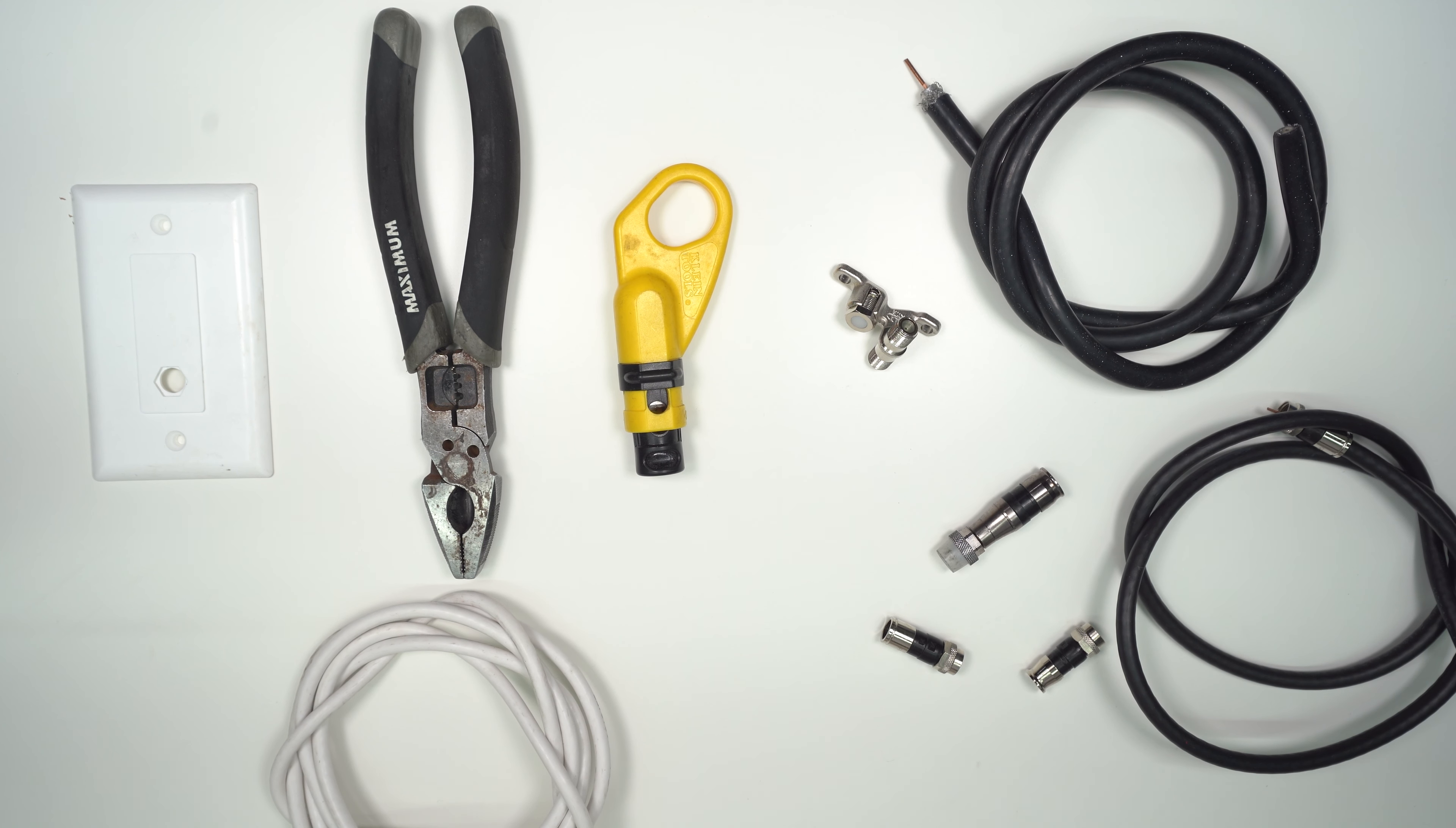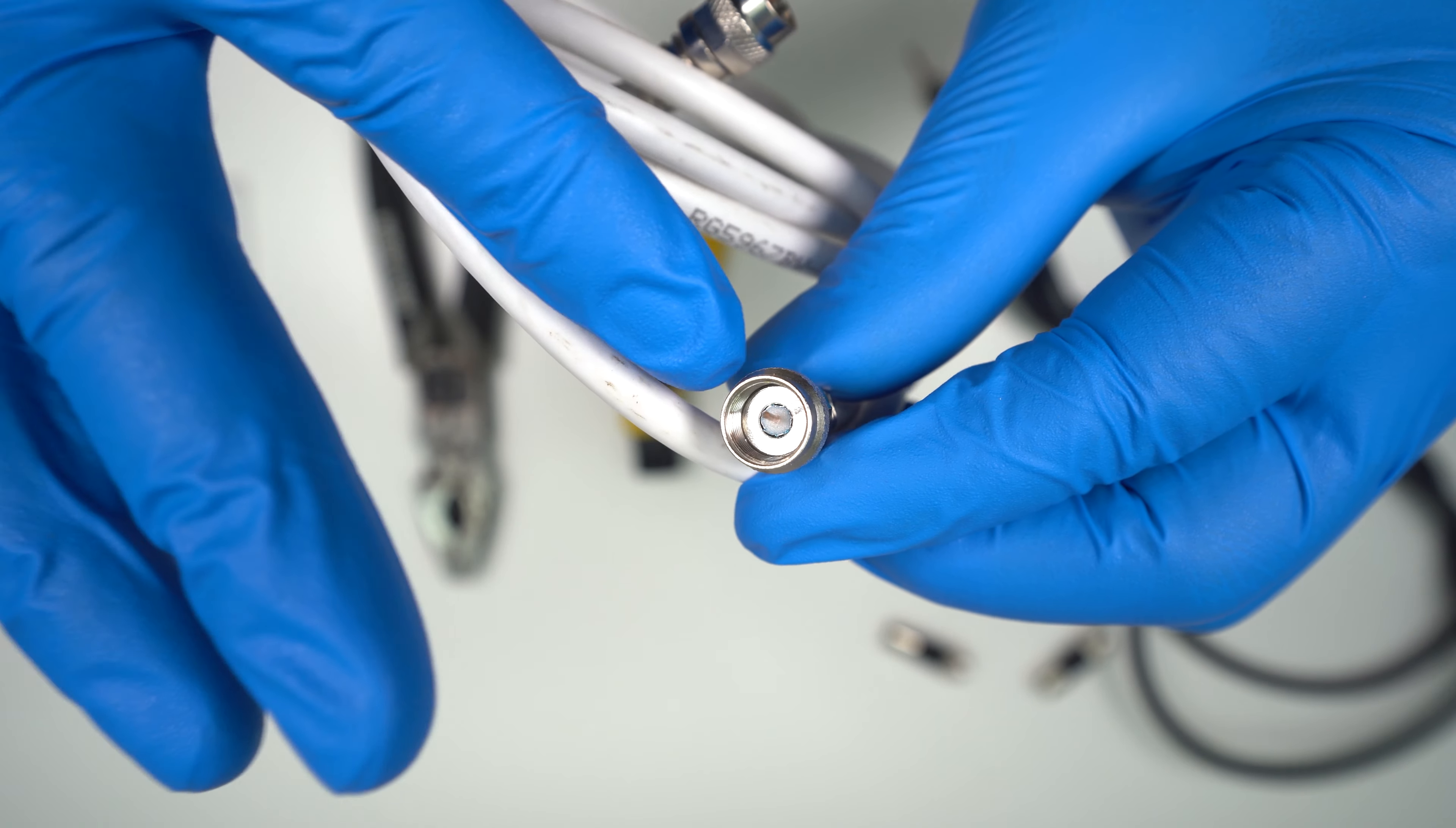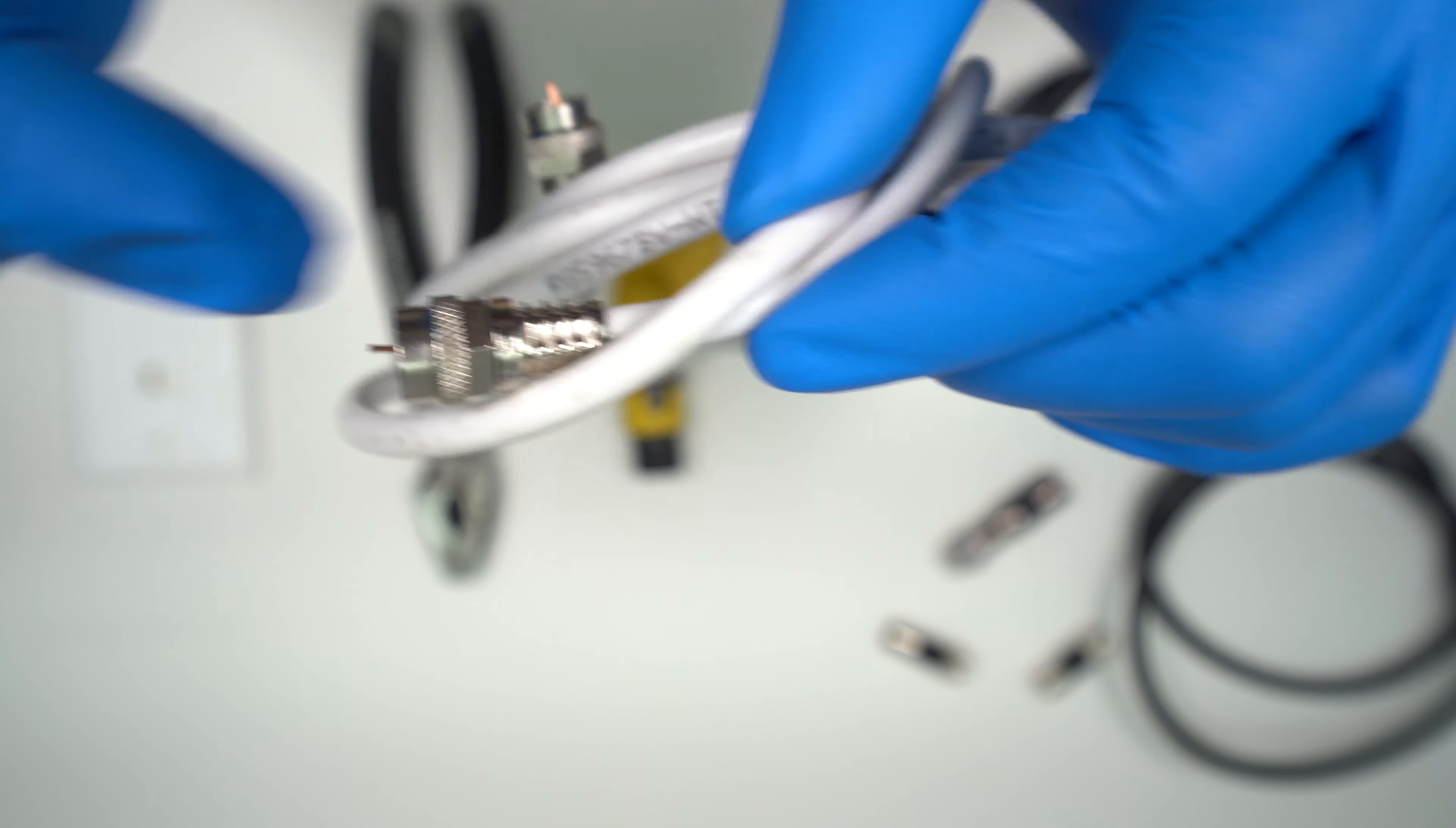So I'm going to start off by showing you the difference between all the cables here. We're going to start with the 59, which is the smaller pin cable. As you can see, the diode in the center is smaller. I will show you the difference when we get to the 56. That one's a little bit bigger, and of course the 11 is bigger than that.